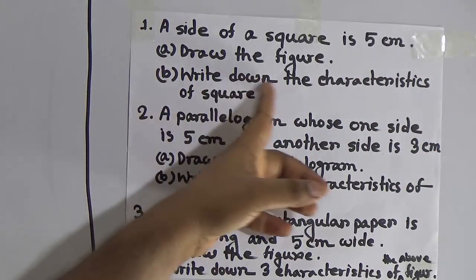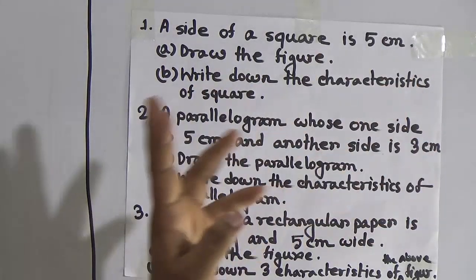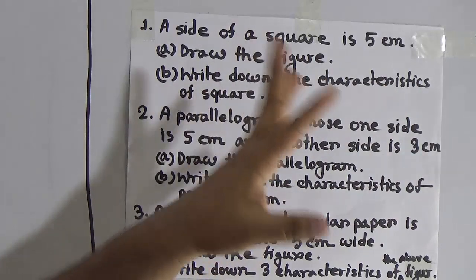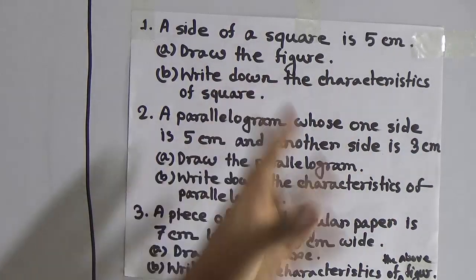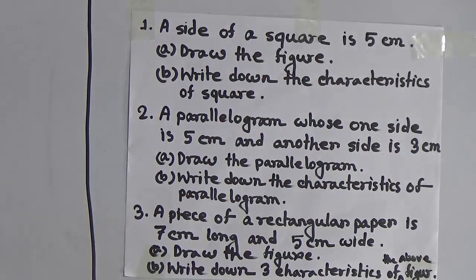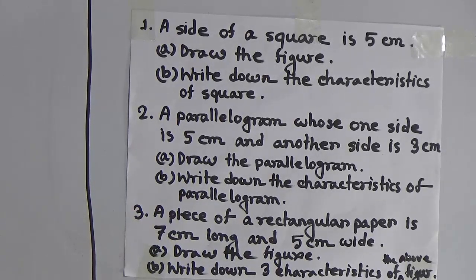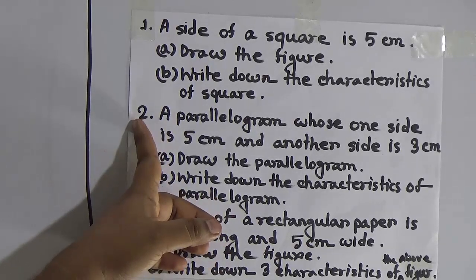Part B: write down the characteristics of the square. We have already learnt this in the half-yearly exam. The characteristics are: all sides are equal, all angles are right angles, and both diagonals are equal. Now, question number 2.